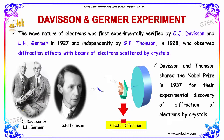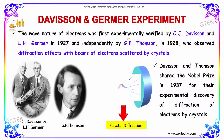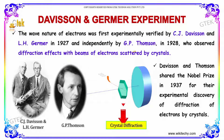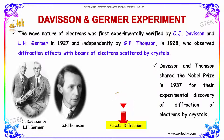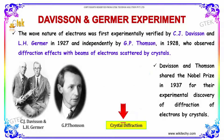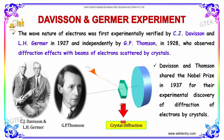The wave nature of the electron was first experimentally verified by the great physicists C.J. Davison and L.H. Germer in the year 1927, and independently by G.P. Thomson in 1928, who observed the diffraction effects with beams of electrons scattered by crystals. Davison and Thomson shared the Nobel Prize in 1937 for the experimental discovery of diffraction of electrons by crystals.